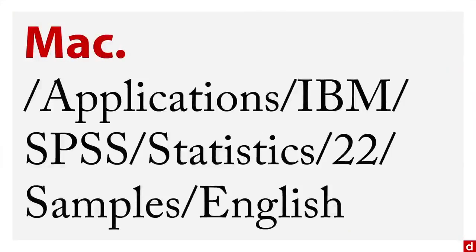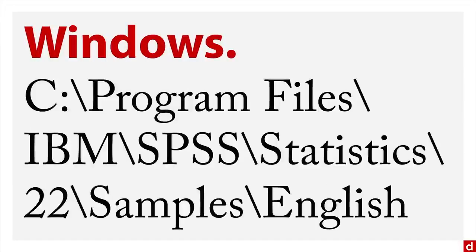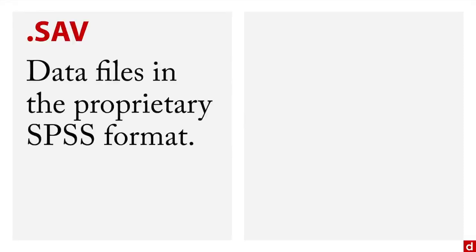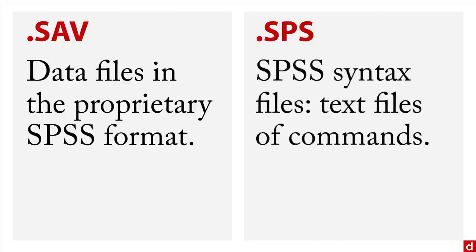If you're on a Macintosh, the sample data is in your Applications folder under IBM SPSS Statistics 22 (or whatever version you're using), then Samples, then English. On Windows, it's at C:\Program Files\IBM\SPSS Statistics\22\Samples\English. When you navigate there, you'll find dot SAV files — data files in the proprietary SPSS format — and dot SPS files, which are SPSS syntax files with commands that can run analyses and graphs.